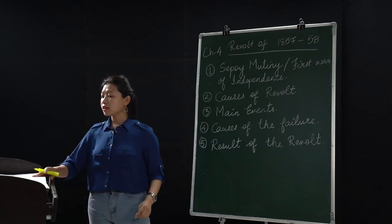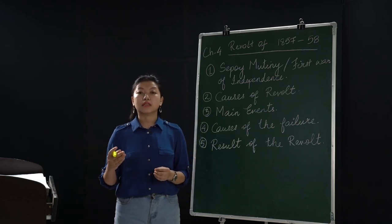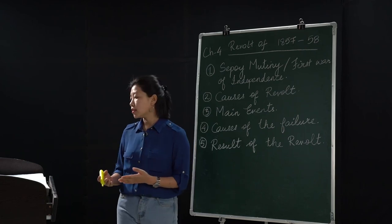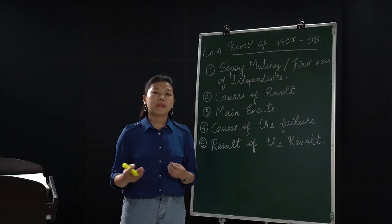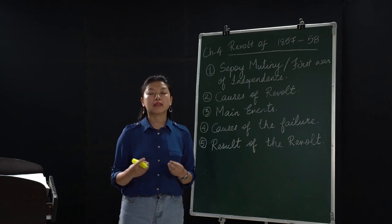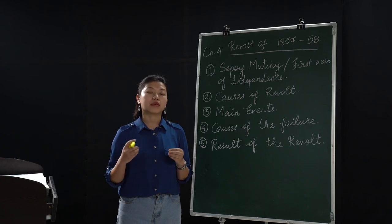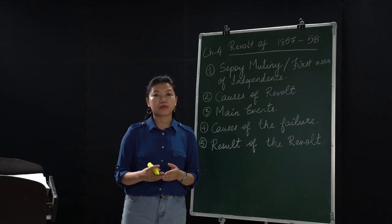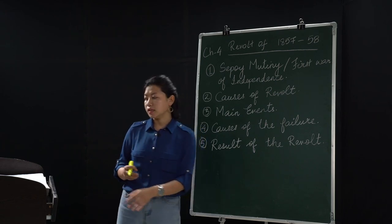The annexation of popular Indian states and cities — like Jhansi, Satara, and Nagpur — which were very well-known, also greatly disappointed the Indians. When the British annexed these states, the Indians were very disappointed, and that too led to the outbreak of the revolt of 1857 and 1858.